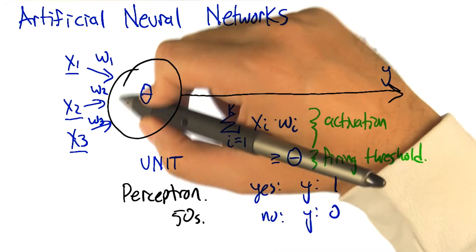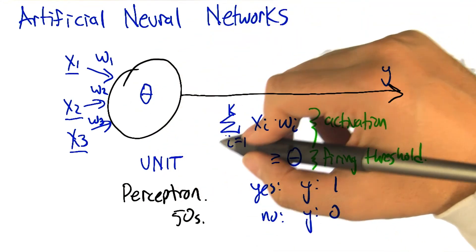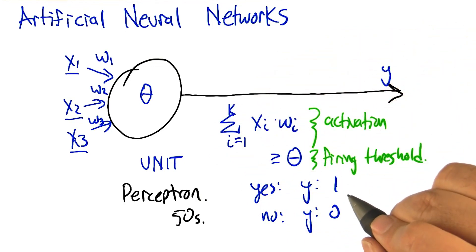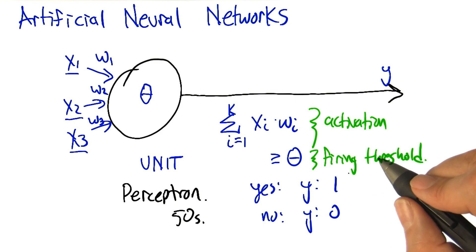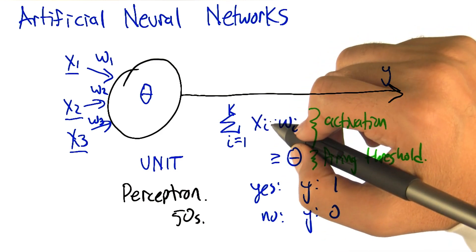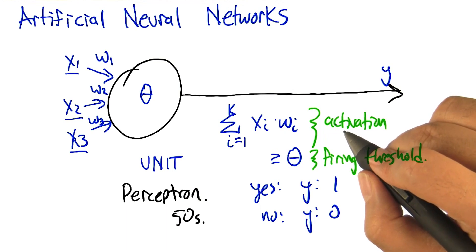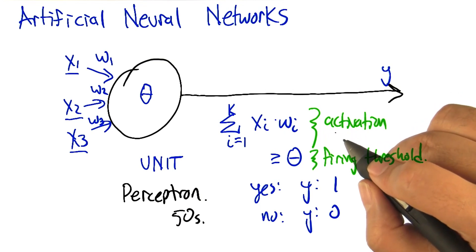All right. So this whole neuron concept gets boiled down to something much simpler, which is just a linear sum followed by a threshold, a thresholding operation. All right. So it's worth kind of thinking, how can we, what sort of things can networks of these kinds of units compute. So let's see if we can figure some of those things out.